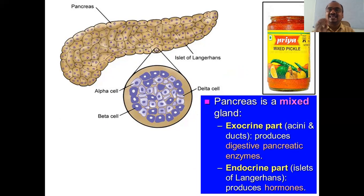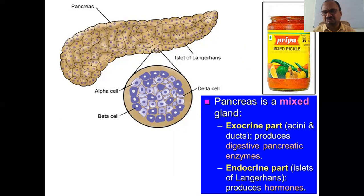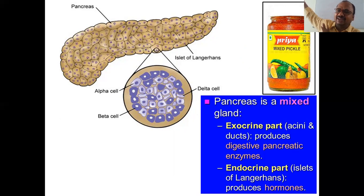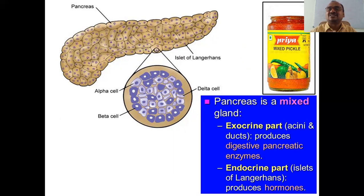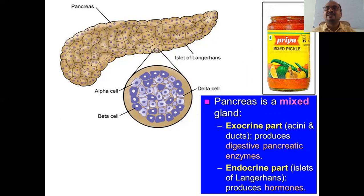The pancreas is also called a mixed gland — just like a mixed pickle — because it consists of both an exocrine part and an endocrine part. Endocrine glands don't have any ducts; they secrete hormones directly into the blood. They are called ductless glands. The pancreas is a mixed gland — like mixing mango pickle and lemon pickle to get a mixed pickle.